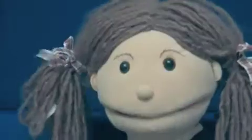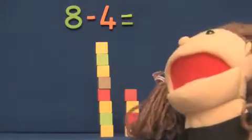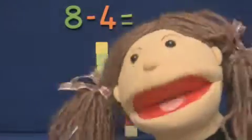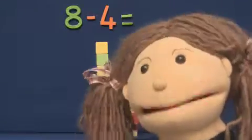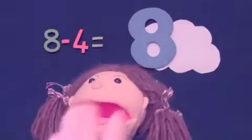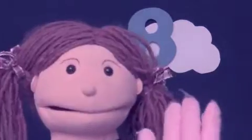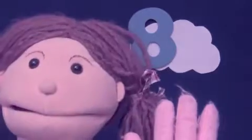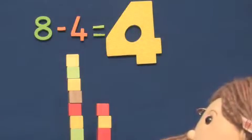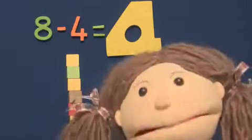So the number sentence will be eight take away four. When we're finding the difference, because we're comparing, we always put the biggest number first, because you can't take eight away from four, but you can take four away from eight. So the number sentence is eight take away four. Put the first number in your head and the second number on your fingers, then count backwards: eight, seven, six, five, four. Eight take away four is four. So the first tower is four bricks higher than the small tower.